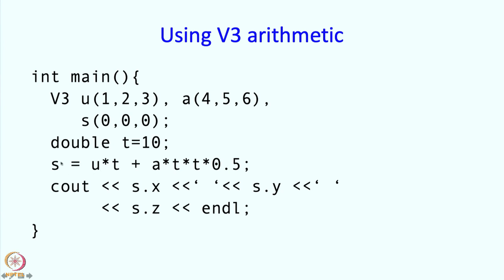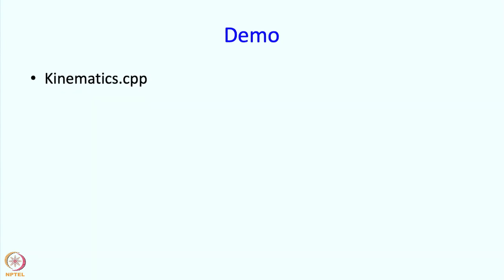But we defined the plus operator as well and therefore this is going to produce the final sum that we wanted. And if we put s equals this, then we can get s dot x, s dot y, s dot z which is going to be half a t squared for t equals t equals 10 and these values of u, u and a. So let us do a demo of this.